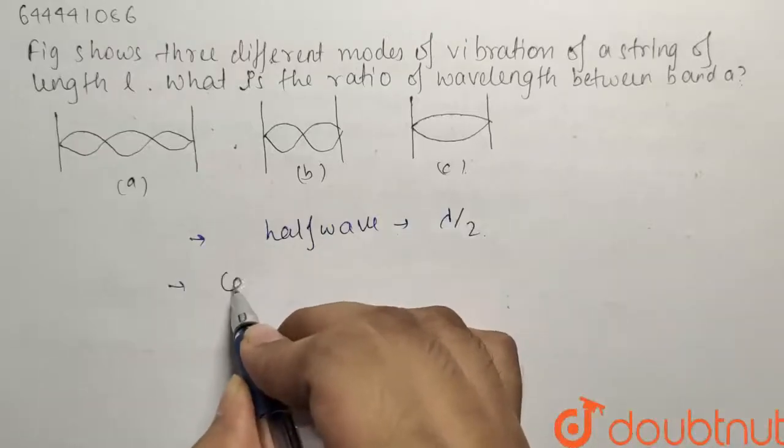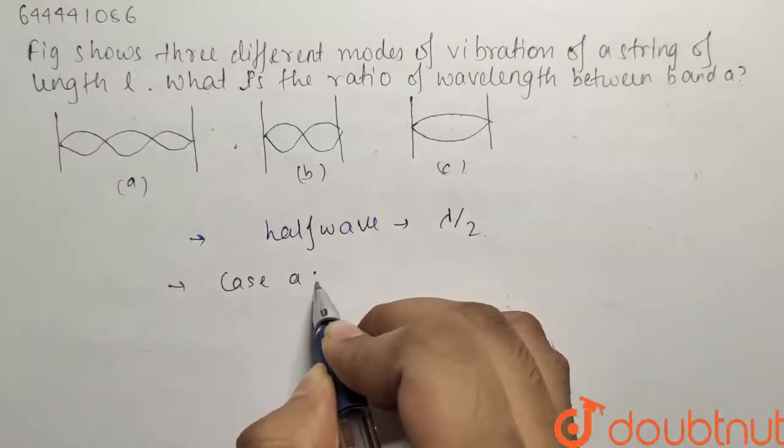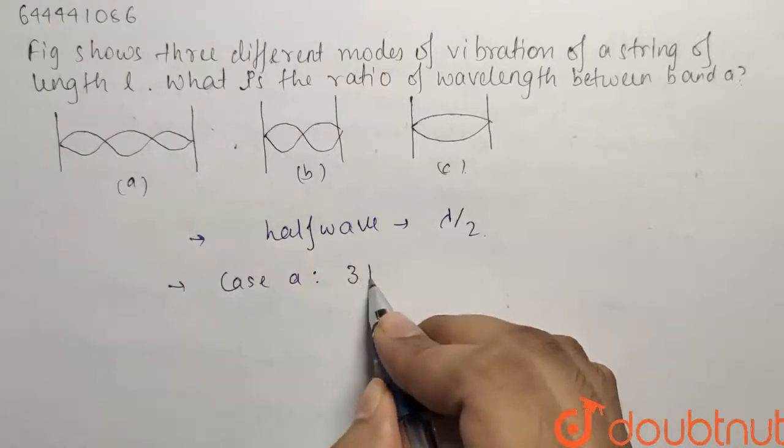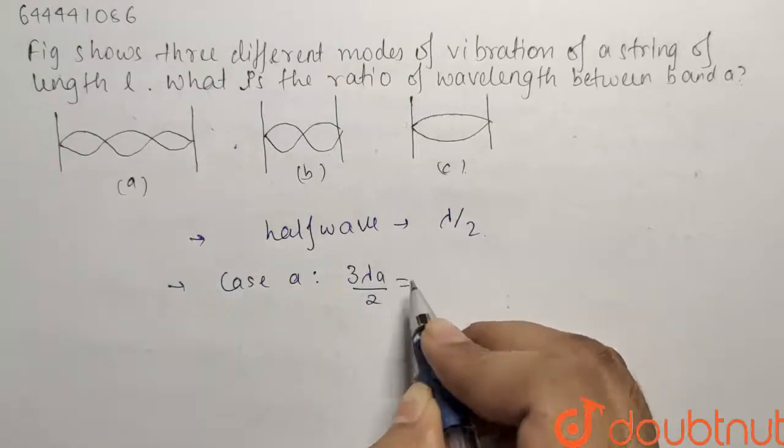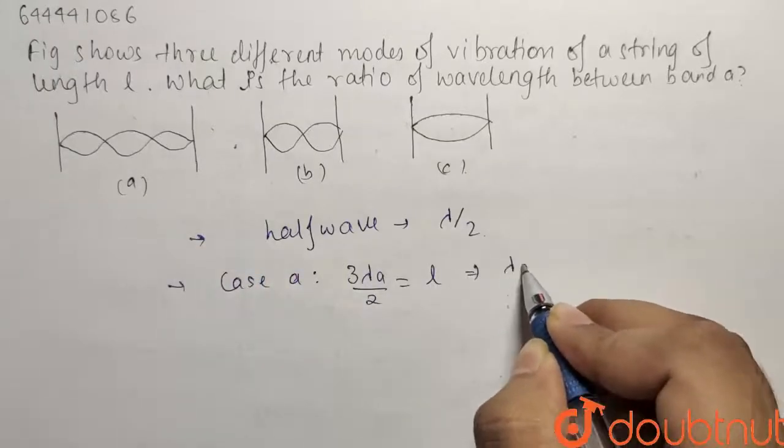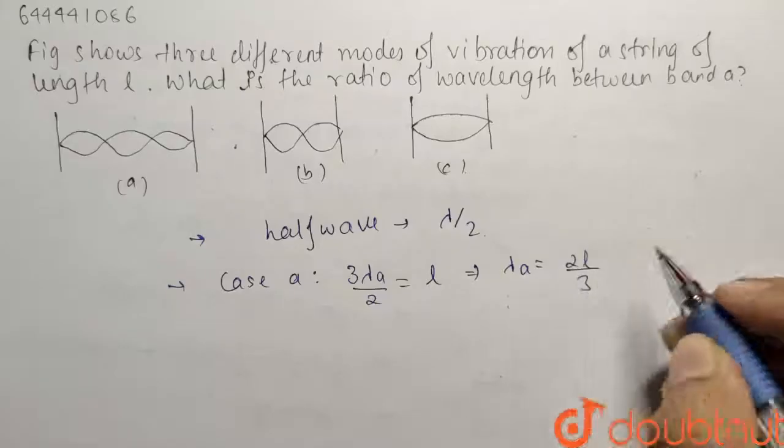So for case A, I can write that there are three half waves, so three lambda A by 2 will be equals to the length of the string that is L. So from here what I get lambda A comes out to be 2L by 3.